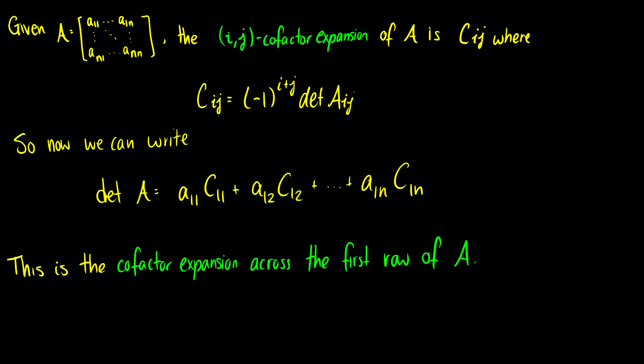Given a matrix A, which is A11 all the way down to Ann (these matrices have to be square), we say the ij cofactor expansion of A is capital C with subscripts ij, where Cij equals negative one to the i plus j times the determinant of capital Aij. How is this different than just Aij or the original expression?